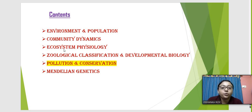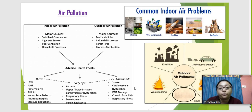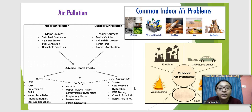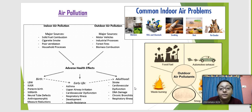Moving on with the next video, we have pollution and conservation. We will start with pollution first. Pollution is whenever in any natural resource of water, air and soil, whenever we have contaminants that degrade the normal quality. When the contaminant levels are much higher and cause harmful effects, then we can call it air pollution or water pollution.